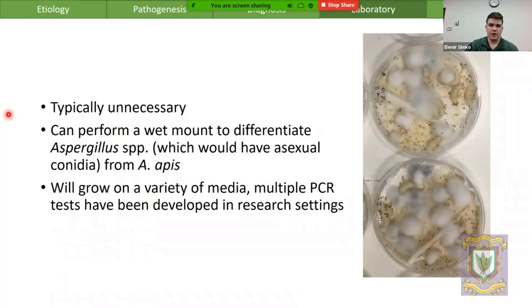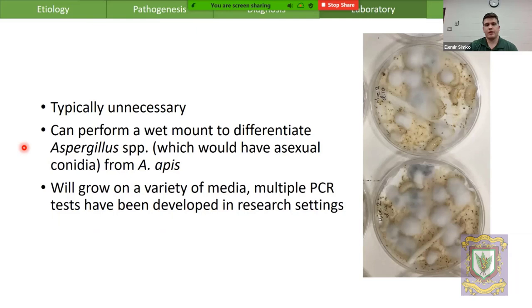In terms of laboratory diagnosis, you typically will never need it because this is a case where you can diagnose based on gross examination of the hive. If you absolutely need to differentiate Ascosphaera spores from other fungal diseases that can overtake a pupa — like Aspergillus — you can perform a wet mount and look for those fruiting bodies. You can also grow them on a variety of media in the lab, and there are PCR tests developed in research settings for determining what strain you're working with.